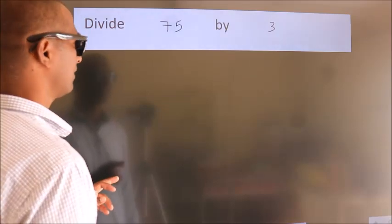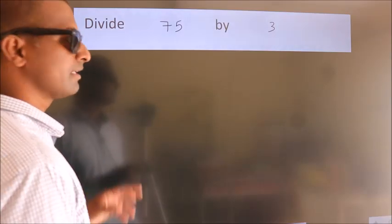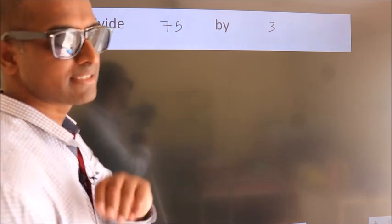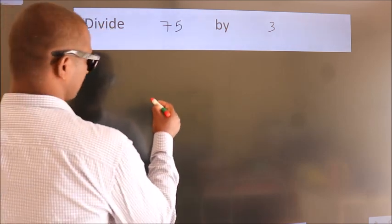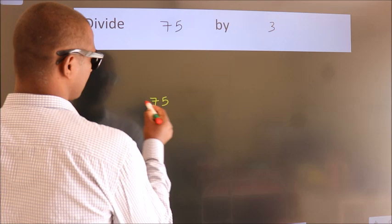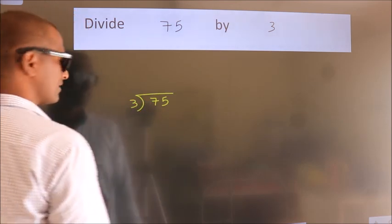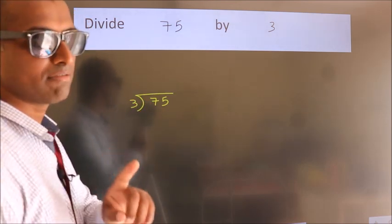Divide 75 by 3. To do this division, we should frame it in this way. 75 here, 3 here. This is your step 1.